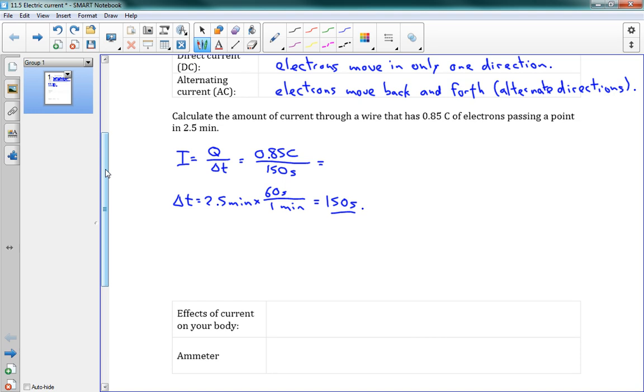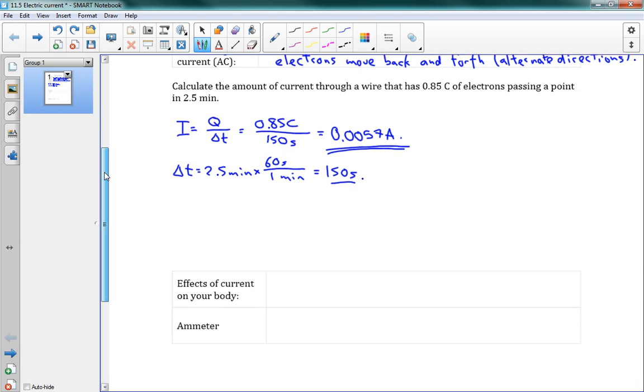So I can put 150 up here. So coulombs per seconds, which is going to become our units amperes. 0.0057 amps. There's our answer. That's how we do current. You're going to have a few problems like that on the homework.